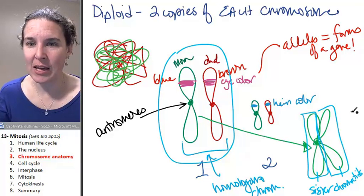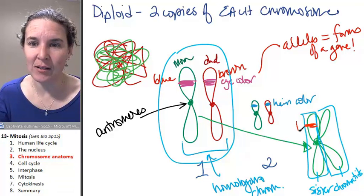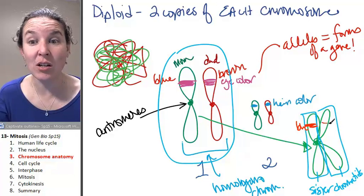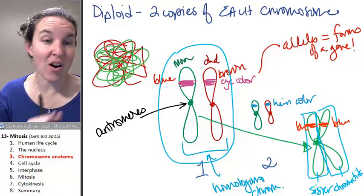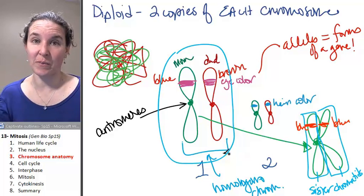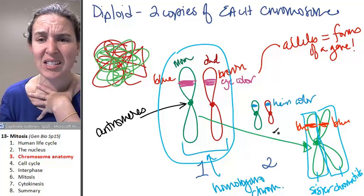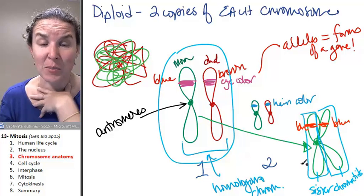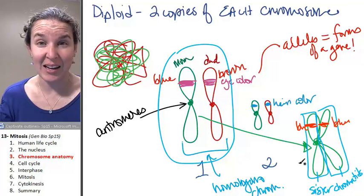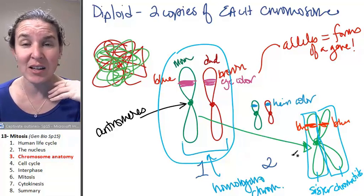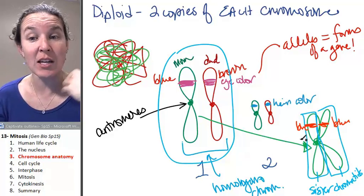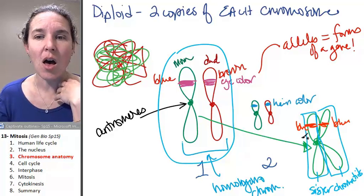If we have the blue-eyed allele on one sister, we have the blue-eyed allele on the other sister. They're identical to each other, which is very significant because all we did was copy our DNA. We didn't do any mixing. We didn't come from somebody else. We just made a copy of it. And we know from DNA replication that the copy is identical.